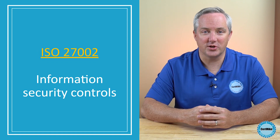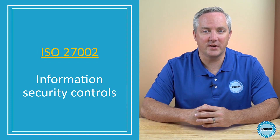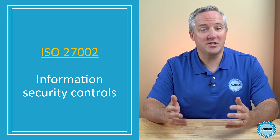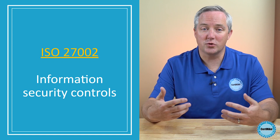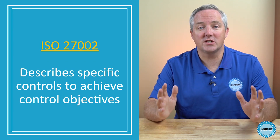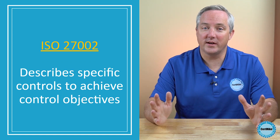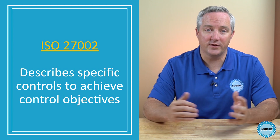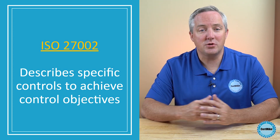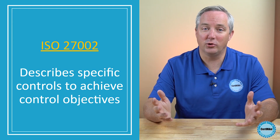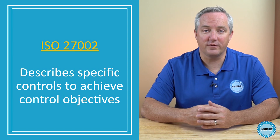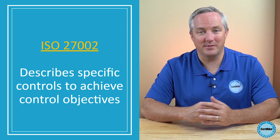The second standard also relates to an organization's information security program, just like ISO 27001. ISO 27002 provides additional details, going beyond control objectives by describing the specific controls that organizations might want to use to achieve those objectives. ISO 27002 covers important areas of security, including risk assessment and treatment, security policy, the organization of information security, and asset management.